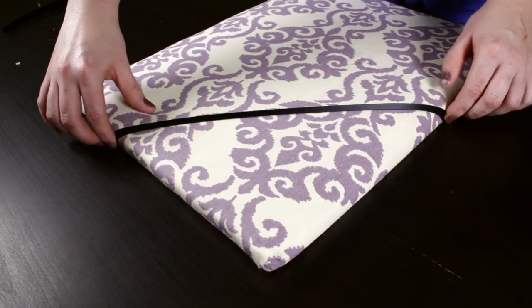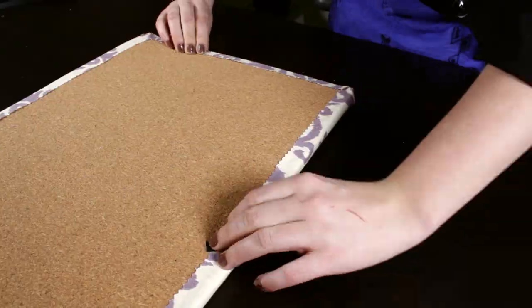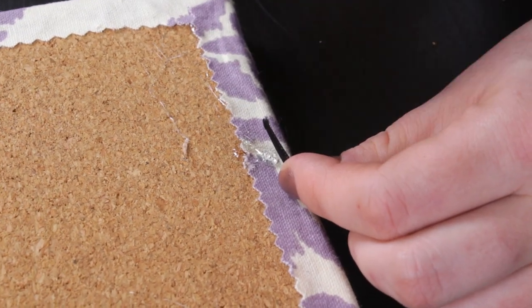Place the 4 strips of ribbon 8 inches in from all 4 corners. Glue the ends of the ribbon to the back of the cork board.